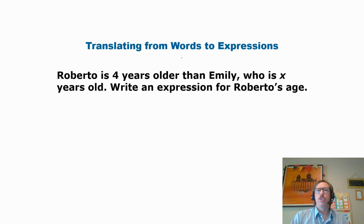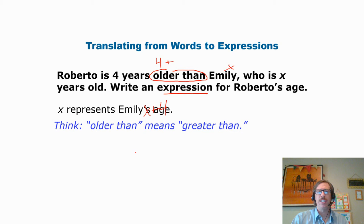Translating from words to expressions. So here we have Roberto is four years older than Emily, who is X years old. We know Emily is X. I like to put little notes above the problem. Write an expression for Roberto's age. We're not trying to write any kind of equation here. We say, OK, older than typically means addition. And the word than is a tricky one. I'll get to that in a bit with difference. But since he's four years older, that means he has to be four more than. And so we just do X plus four. X is going to represent Emily's age. And older than means greater than.